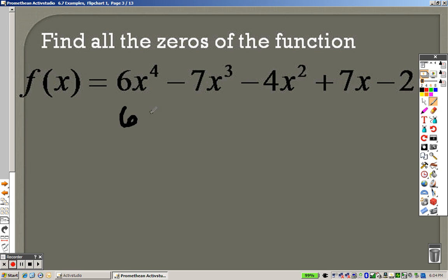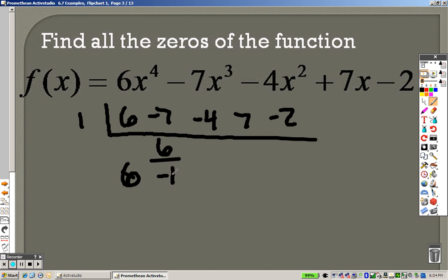So I'm going to write this down, I got a 6, negative 7, negative 4, 7, negative 2. And we're going to start with 1 first, so I bring down a 6. 6 times 1 is 6, end up getting negative 1. Multiply those to get negative 1, add them together to get negative 5. Multiply those together to get negative 5, add them together to get 2. Multiply those to get 2, I get 0, and my goodness, I luck out first try.